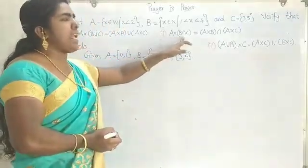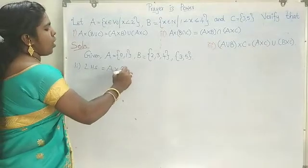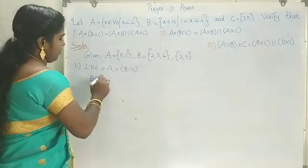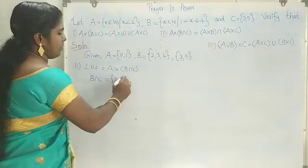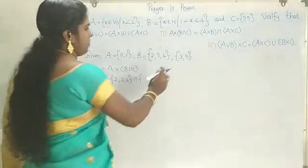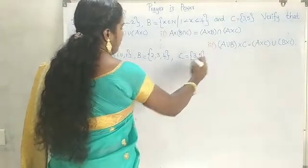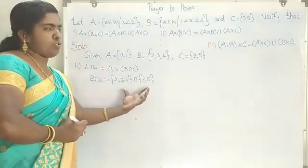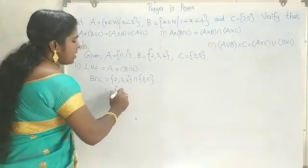Now we find the LHS, which is A cross (B intersection C). First, we solve the bracket: B intersection C. B is {2, 3, 4} and C is {3, 5}. Intersection means we write the common elements from both sets. The common element is 3. Therefore, B intersection C is equal to {3}.